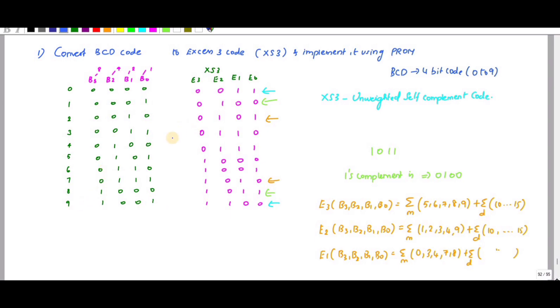XS3 means you add 3 to the BCD value. So if I add 0 with 3, the XS3 values start from 3. And 9 plus 3 is 12, so XS3 ranges from 3 to 12.